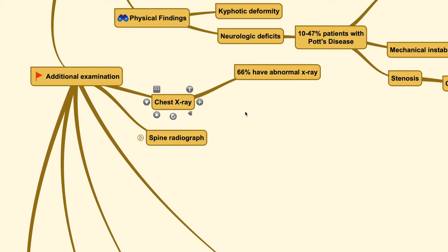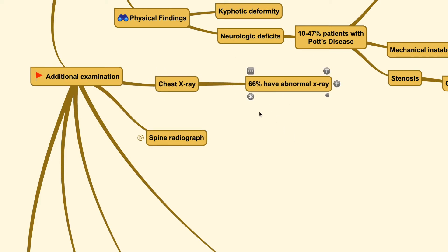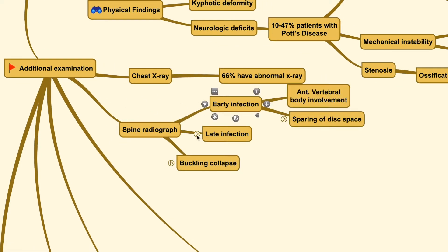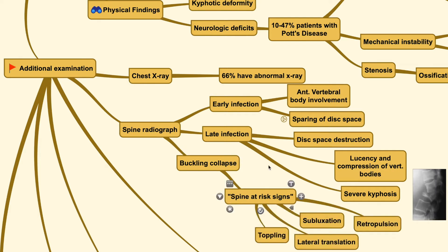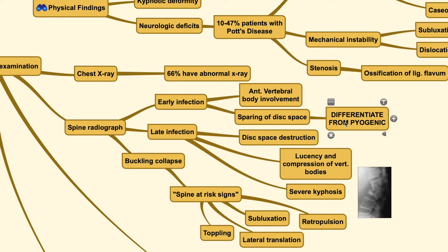While we have discussed about the pathophysiology that shows that spine tuberculosis usually comes from the lung, only around 66% have an abnormal chest x-ray. On the spine radiograph, you can find different findings based on different levels of infection. In early infection, the disk space is spared and the vertebrae is involved anteriorly, which helps us differentiate it from pyogenic infection in which the disk space is initially invaded.